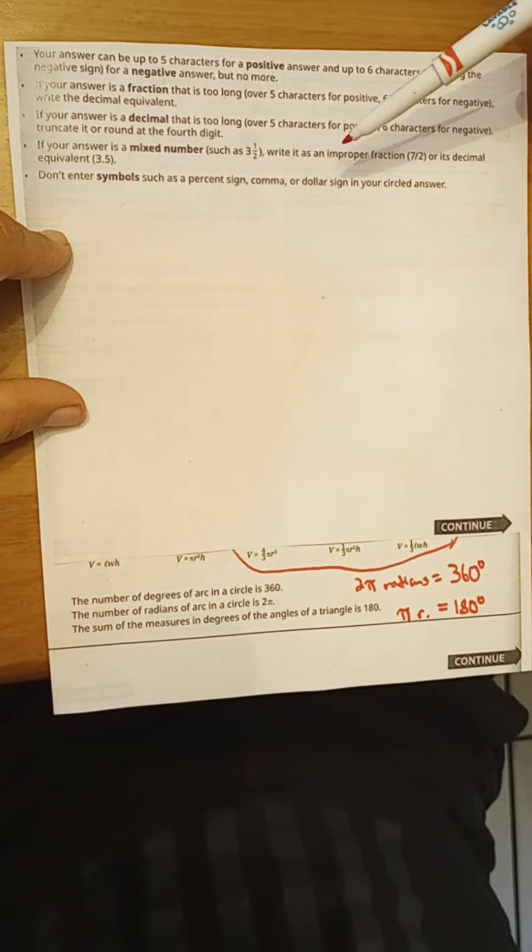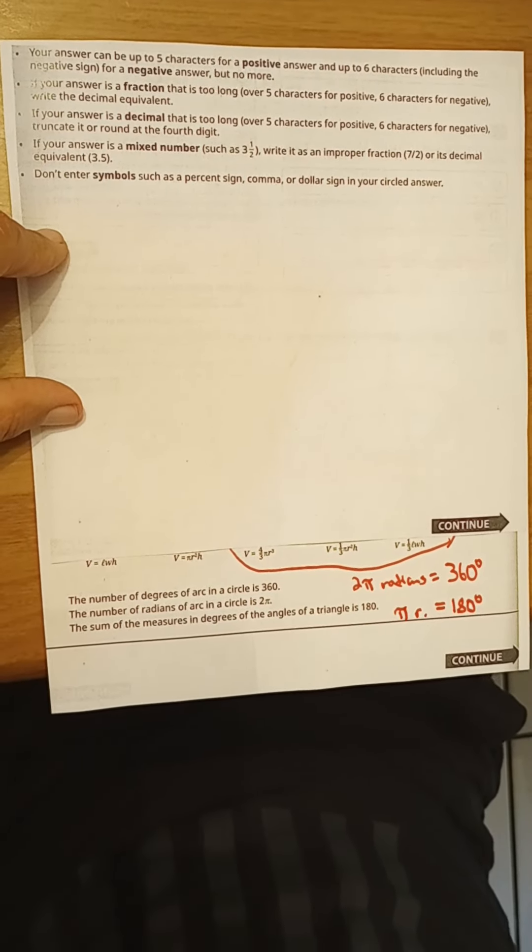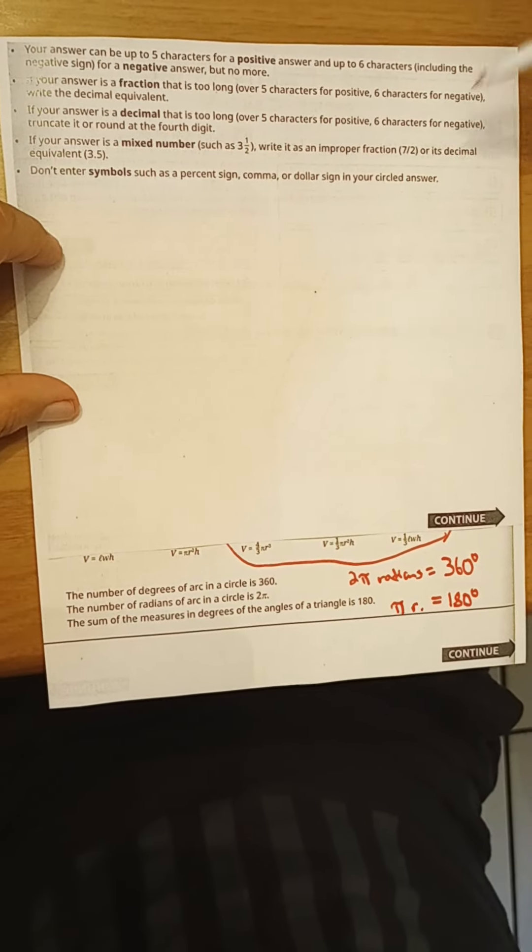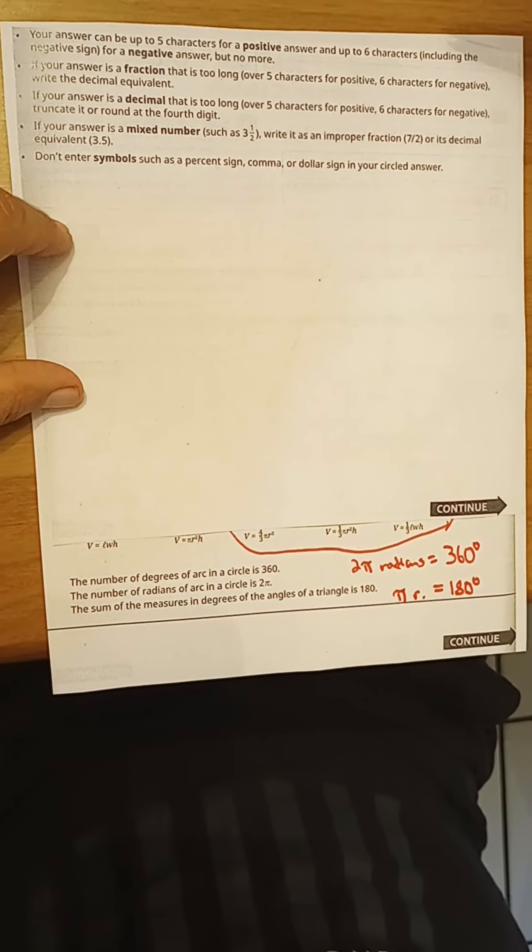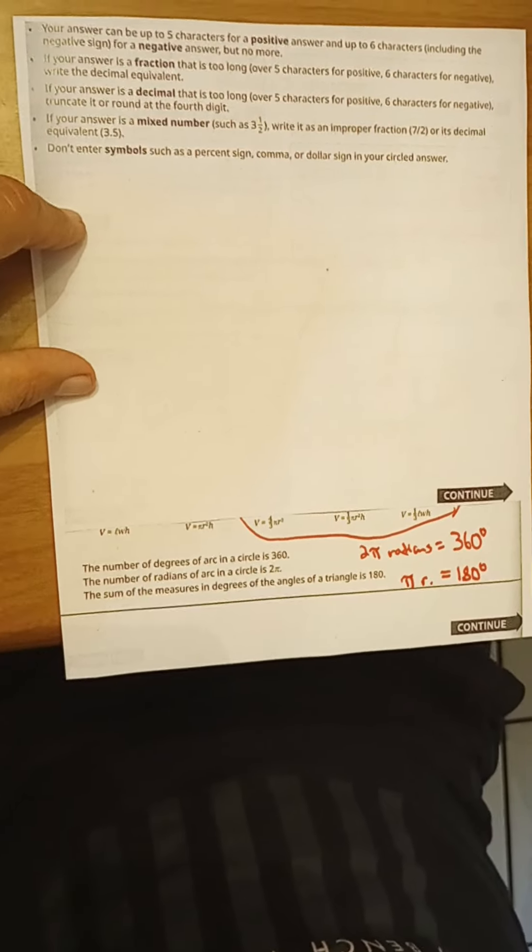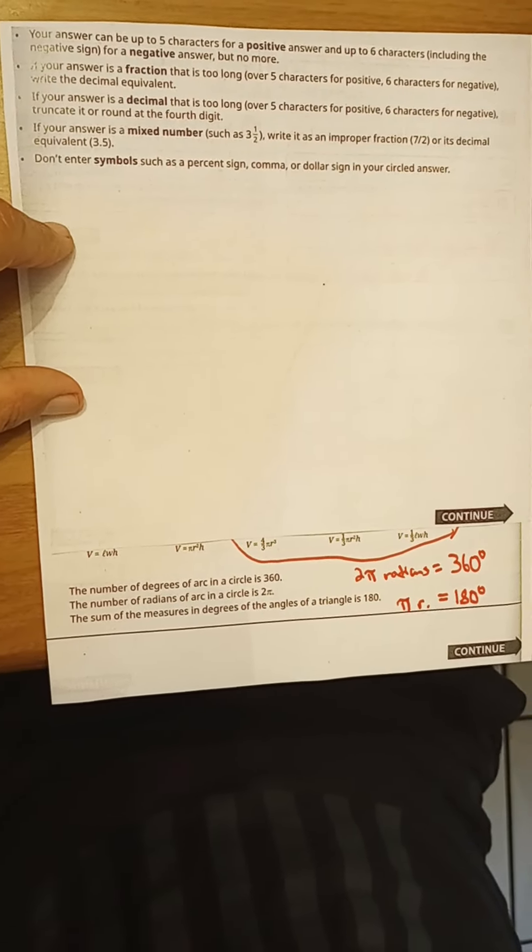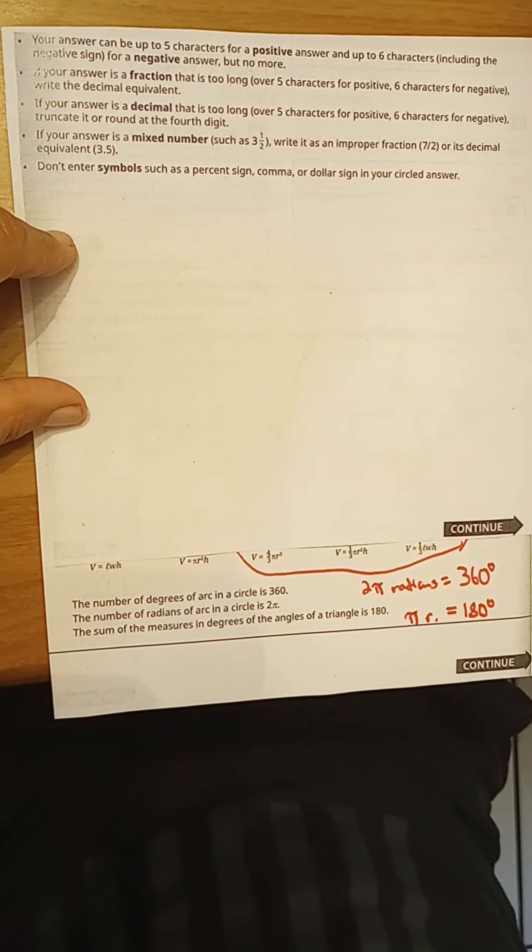Don't enter symbols such as a percent sign, comma, or dollar sign in your answer. It says circled because in the book, but obviously it's the answer you choose on the computer or that you enter on a student-produced response.